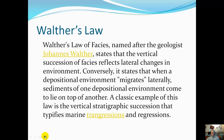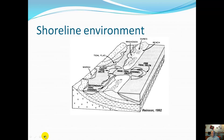We looked at Walther's Law already. You will definitely have a question on looking at some facies. We looked at three types of rock: sandstone, shale, and limestone. Here's a diagram of a shoreline environment, and you can see the different rock layers. Depending on whether it was a transgression or regression, you can see some shale here and some type of sandstone in this area.